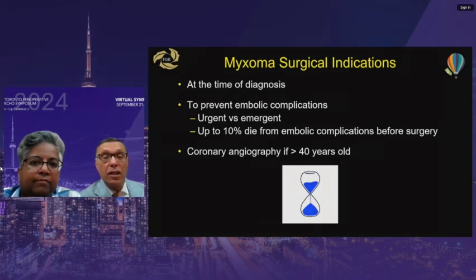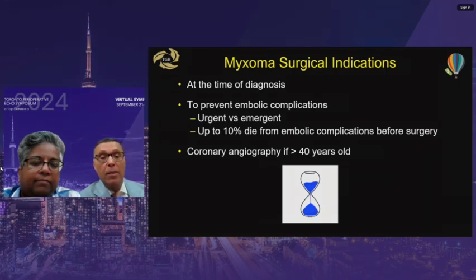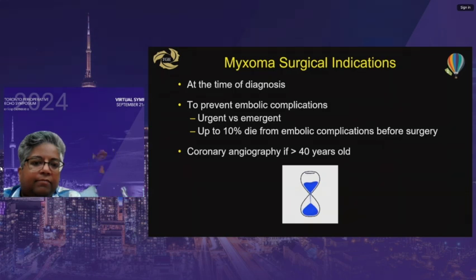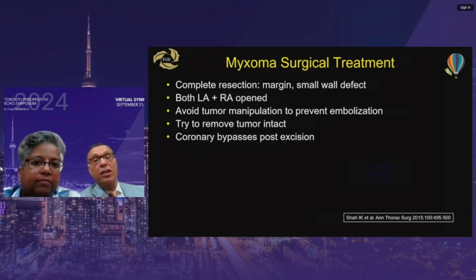Surgical indication for myxomas is at the time of diagnosis. Villous-type myxomas warrant much sooner operation due to embolic risk; smooth ball-type ones allow slightly more time to get coronary angiography first. A significant percentage of patients die from embolic complications prior to surgery. Complete resection — removing the tumor along with surrounding myocardium rather than just scraping it off — is essential, because leaving tumor cells behind leads to recurrence. A biatrial approach is used to avoid tumor manipulation and spillage of cells.